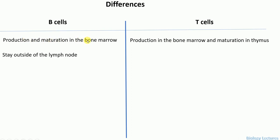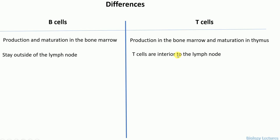Another difference is that when B cells mature in the bone marrow, they migrate to the lymph node, and in the lymph node they stay exterior — on the outside of the lymph node. Whereas T cells are actually interior to the lymph node.